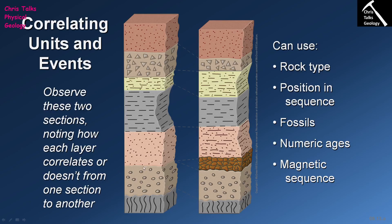By working our way up through our stratigraphic column and working out how each layer of rock could have formed, we end up producing a vertical geologic history for this location only — and that's very important. The geologic history we've come up with for this location may not be repeated at other locations. Each geologic history is appropriate only to the location where you are looking at the rocks; as soon as you move to another location, you have to produce a new geologic history.